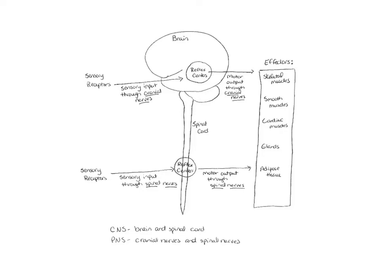We're going to start out with Chapter 13, which is on the spinal cord and the spinal nerves. This picture shows both Chapters 13 and 14. In Chapter 13, we're dealing with the spinal cord and the spinal nerves coming off of it. When we get to Chapter 14, we'll look at the brain and the cranial nerves going into the brain. So we're really just looking at the spinal nerves and the spinal cord in this chapter.